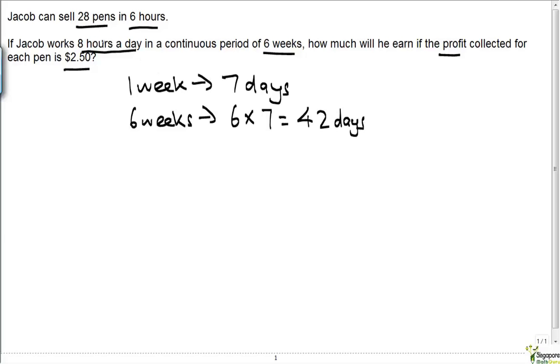Now, if he works 8 hours a day, all we have to do is take 42 times 8 and we get 336 hours worked in total.